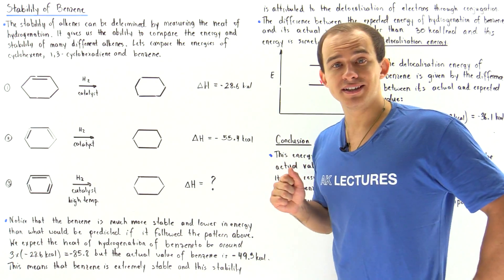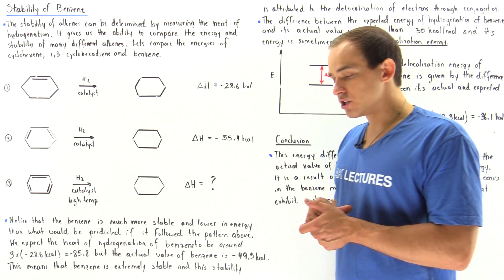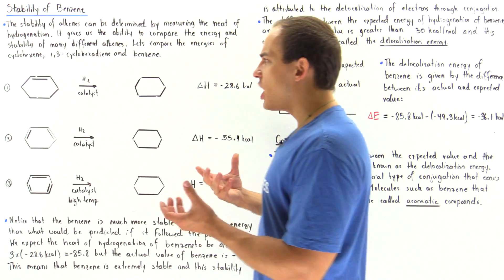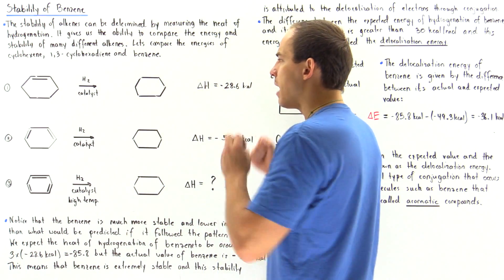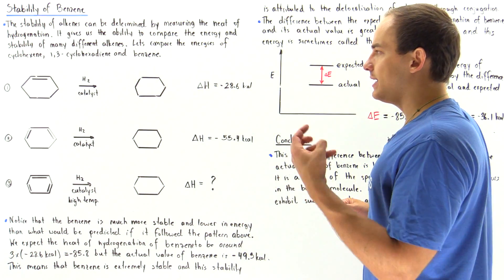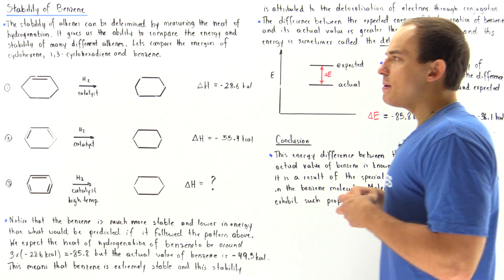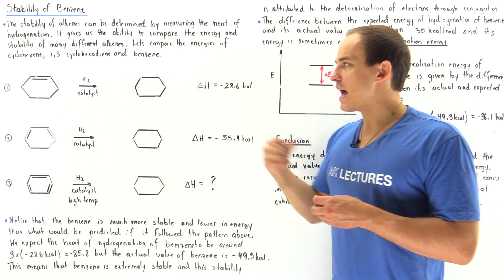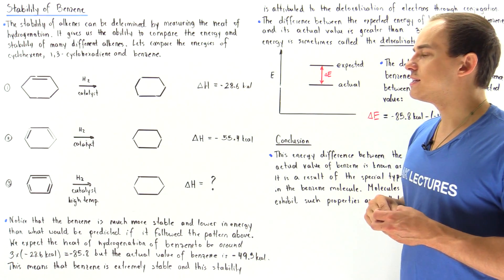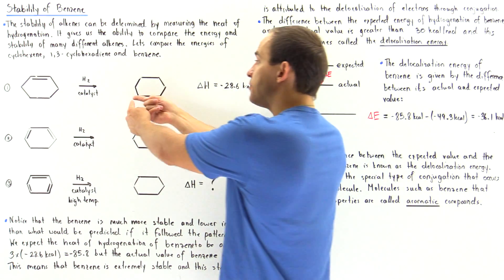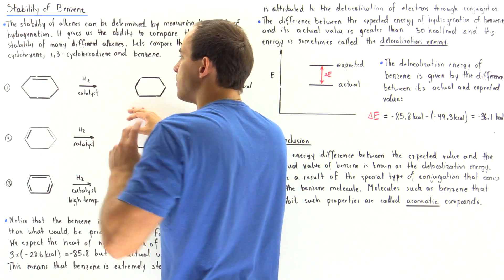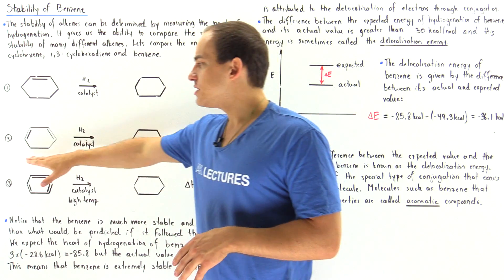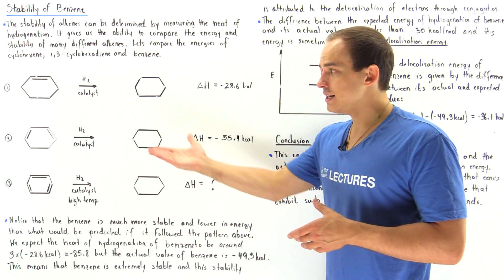The heat of hydrogenation of cyclohexene is about -28.6 kcal per mole. That basically means that every time we go from cyclohexene to cyclohexane, this amount of energy is released to break the π bond. The cost of breaking that π bond is given by this quantity, and that means cyclohexane is more stable than cyclohexene, which makes sense.